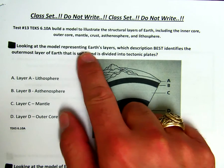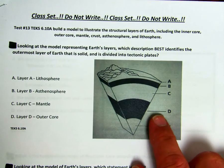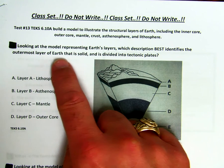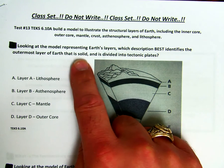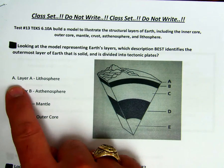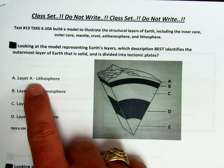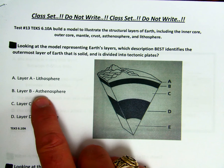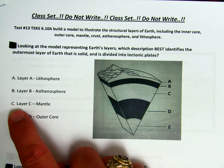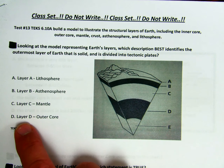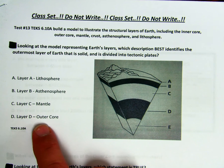Looking at the model representing Earth's layers, which description best identifies the outermost layer of Earth that is solid and is divided into tectonic plates? Is it A, layer A, the lithosphere; B, layer B, the asthenosphere; C, layer C, the mantle; or D, layer D, the outer core?